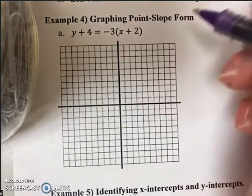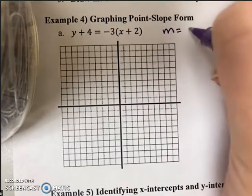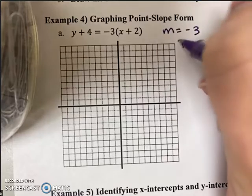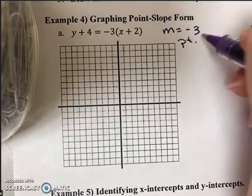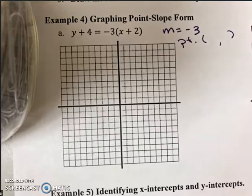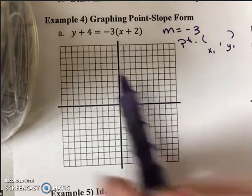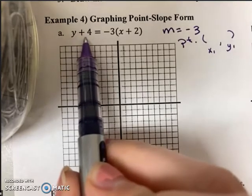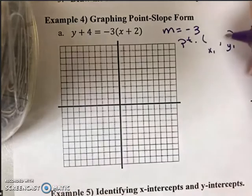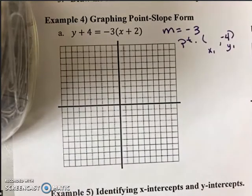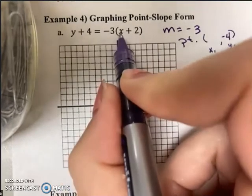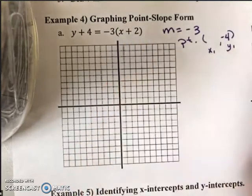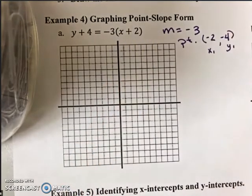So looking at this equation, I can see that my slope is a negative 3 and a point that lies on the graph. Again, being in form x₁ comma y₁, it's going to be y minus a negative 4. So negative 4 would go here. And x minus a negative 2. So negative 2 would be right here.